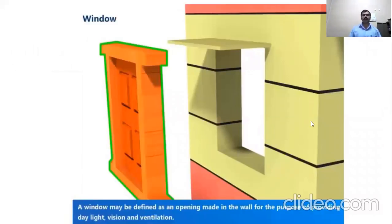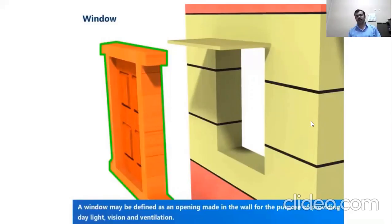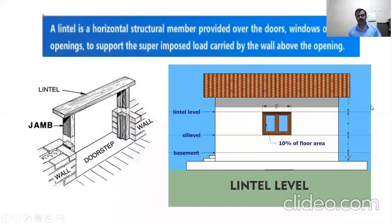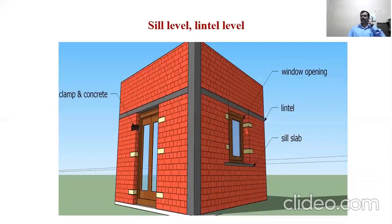Windows are very essential for opening purposes. Windows are provided for admitting light and ventilation. Windows are provided in each and every room to admit fresh air. Lintel level is the top level of the opening. The bottom level of a window opening is called the sill level.